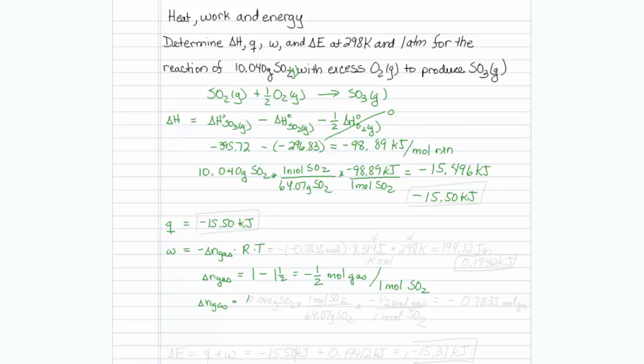I need to take my 10.040 grams of SO2, divide by the molar mass of SO2, and then recognize that there is minus one half per mole of gas per one mole of SO2. So that math gives me a minus 0.7835 moles of gas.